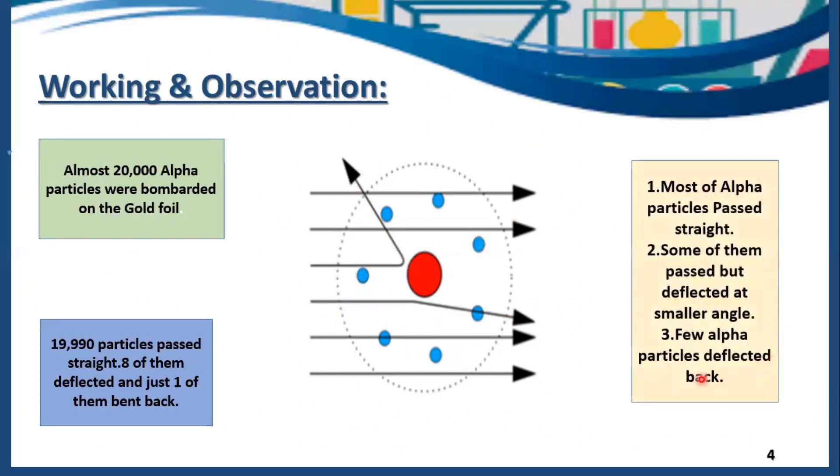These are the observations made by Rutherford. He said most of the alpha particles passed straight. Some of them deflected at a very small angle, which are 8. Few alpha particles deflected back, which are just 1 or maybe 2.